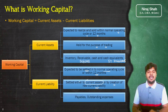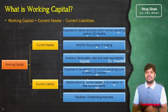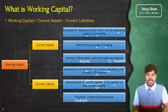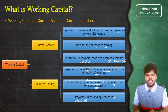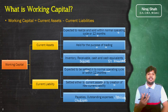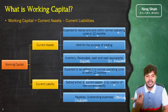Current liabilities के examples में payables यानि creditors हैं, outstanding expenses हैं, और कई तरह की provisions जैसे provision for tax, provision for bad debts — ये सब चीजें current liability की definition में आती हैं।